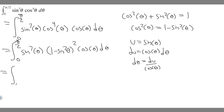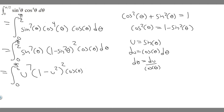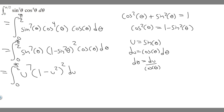We rewrite the integral: replace sin θ with u, giving us u to the seventh times (1 − u²) squared times cos θ, then replace dθ with du / cos θ. The cos θ terms cancel, leaving us with the integral from 0 to π/2 of u⁷ · (1 − u²)² du.